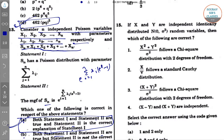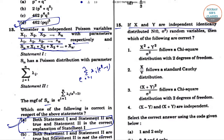The next question is question 15. If X and Y are independent, identically distributed N(0, σ²) random variables, then which of the following are correct?